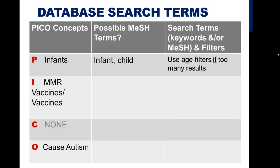For the first concept in the question — infants — I checked the MeSH database and found that there are terms for infant and child. I decided first to conduct my search based on the I and the O concepts of the question to see the results, and then ultimately to limit the results by using the filters, if necessary.